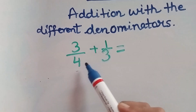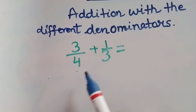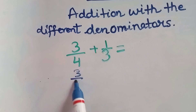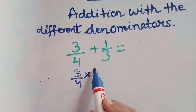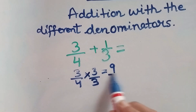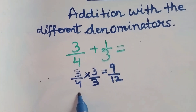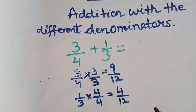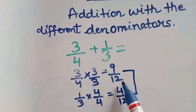Let us take another example: 3 by 4 plus 1 by 3. Here the denominators are different, so we will make the denominators same. We can make the denominators 12 in both fractions. For 3 by 4, we multiply by 3 by 3: 3 into 3 is 9, and 3 fours are 12. For 1 by 3, we multiply by 4 by 4: 4 ones are 4, and 4 threes are 12. Now both fractions have the same denominator — 9 by 12 and 4 by 12.